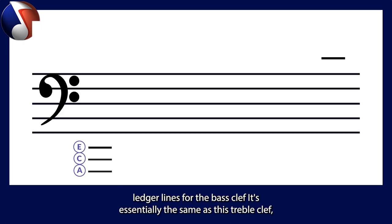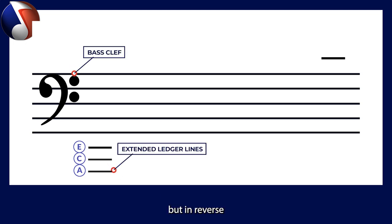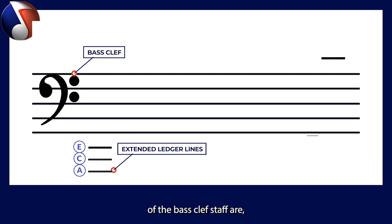For the bass clef, it's essentially the same as the treble clef, but in reverse. The notes on the lines of the bass clef staff are E, G, B, D, F, A and C.